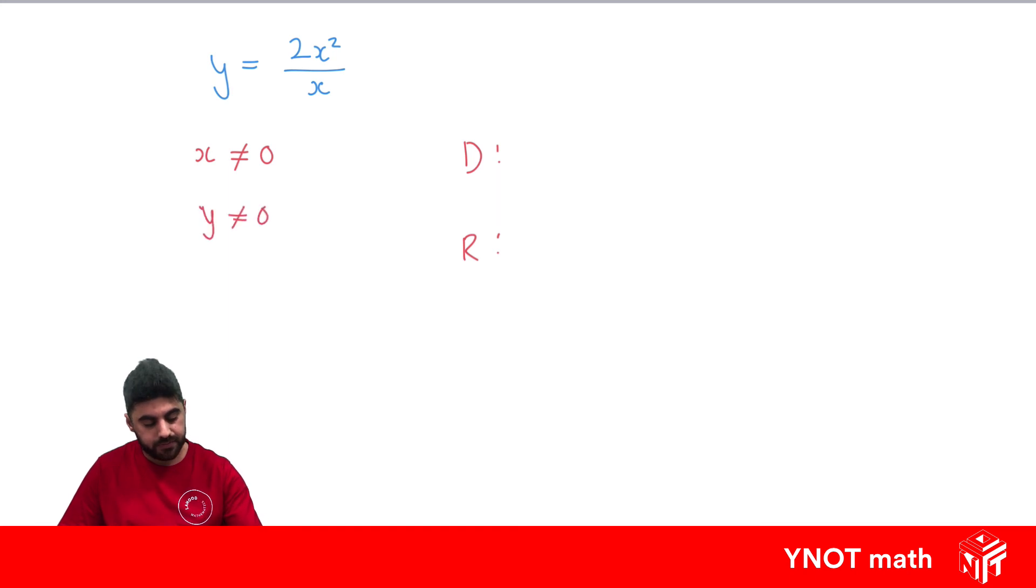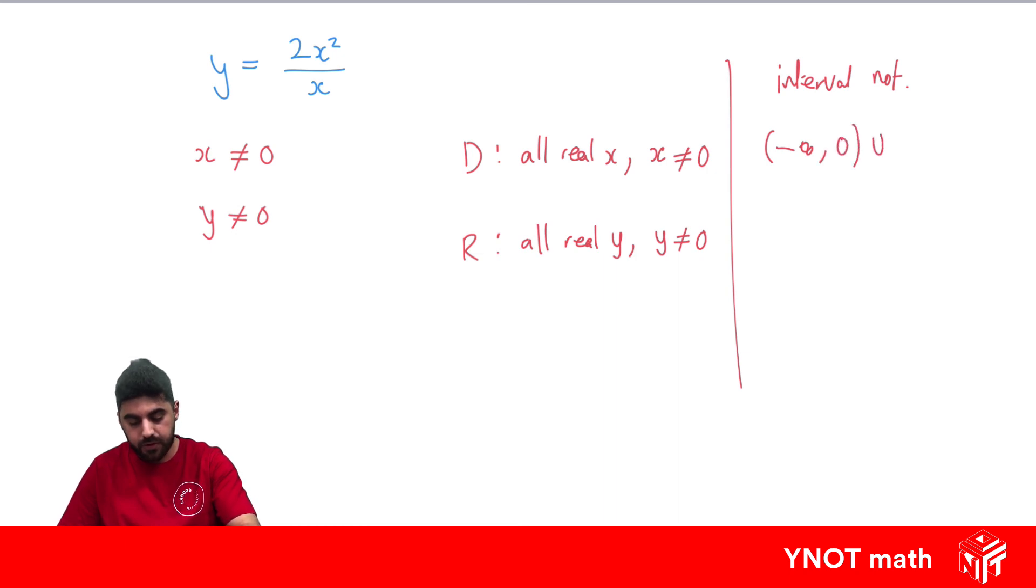So let's make a note of that. When there's only one value excluded for each we can write our domain like this: all real x, except x cannot equal 0. And we can do the same thing for y: all real y except y cannot equal 0. So how to write this in interval notation? When we want to exclude one value only we can write it like this: we can write x can be between minus infinity and 0 but not equal to 0, with the union that it can also be between 0 and infinity. And we actually get the exact same thing for y because y cannot also equal 0 as well. So this shows all values except for 0.